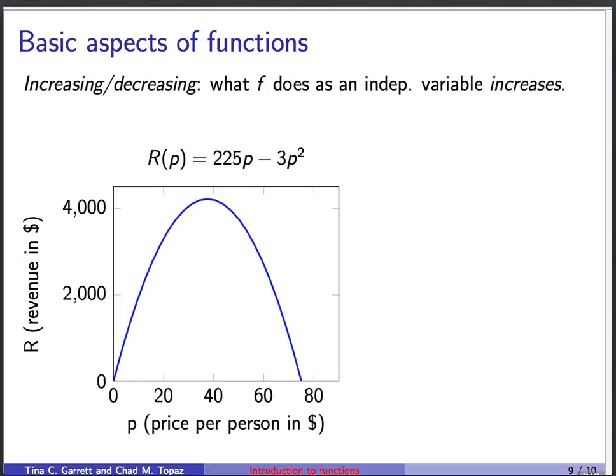Another piece of useful terminology is for us to be able to say whether a function is increasing or decreasing. And this always means what the function does as the independent variable increases. And that's key. So you have to imagine always walking from left to right, increasing the independent variable, and asking whether the function goes up or down. And what we see is there's sort of two halves of this. To the left here, the function is increasing because as we increase p, r goes up. But over here, the function is decreasing because as we increase p, r goes down. So over here, decreasing.